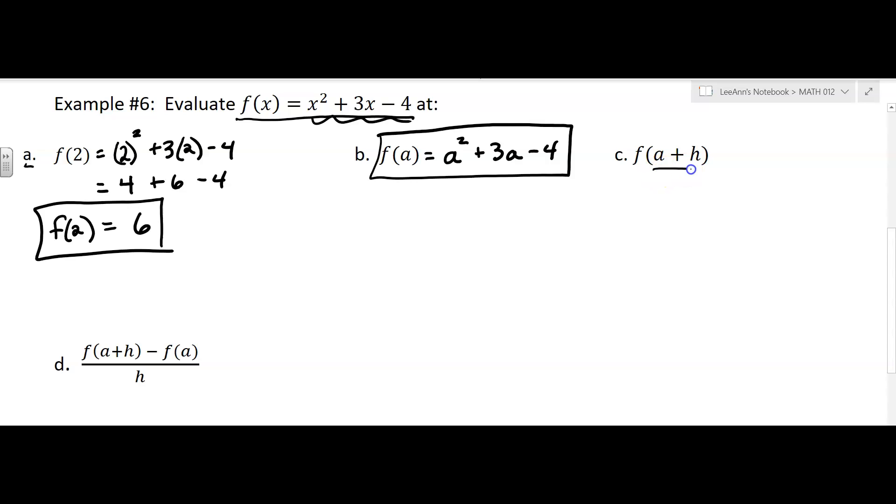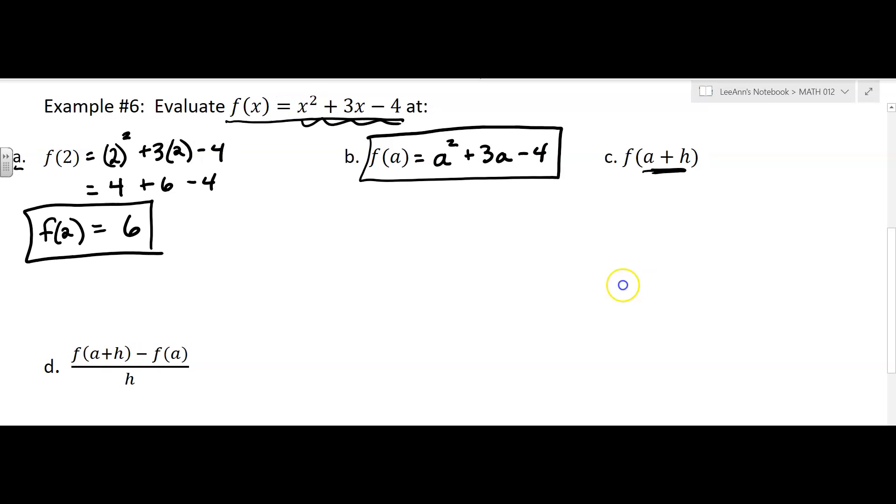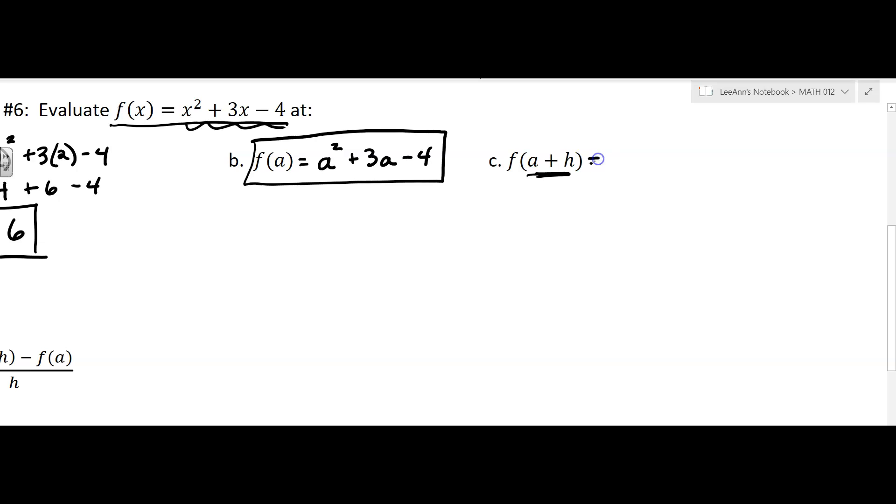Now in part c, they're replacing x with a plus h. So this is going to take me a little bit of room. And so I'm going to replace x with a plus h. So a plus h squared plus 3 times a plus h minus 4. Now you're going to have to square a binomial here. That's something I'm hoping that you learned in a past class. If you don't remember how to do it, go a plus h times a plus h, and you can just foil it out. But you're going to get a squared plus 2ah plus h squared. And then we're going to have to distribute the 3. So plus 3a plus 3h minus 4.